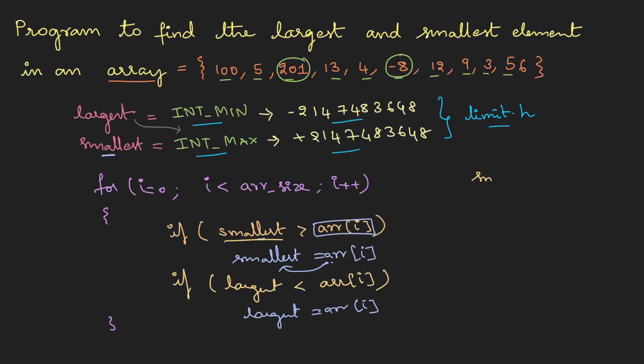Let's go with the smallest. The initial value we have stored as +2147483648. Now as we enter the loop, it compares this with the first array element which is 100. Obviously 100 is less than this value, so this will be changed to 100.